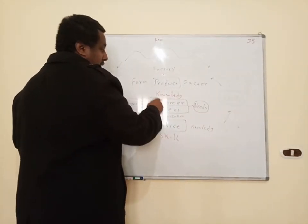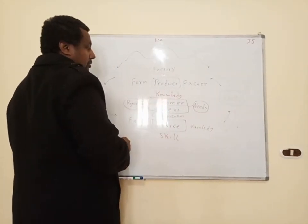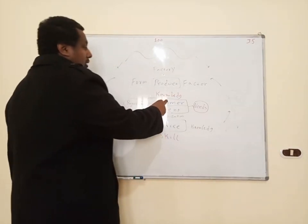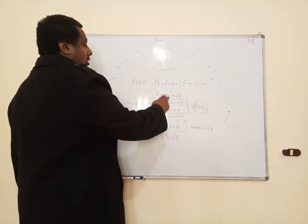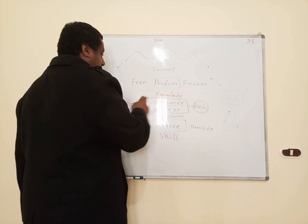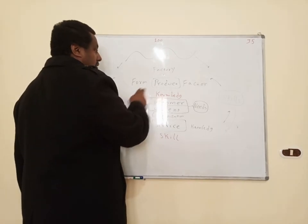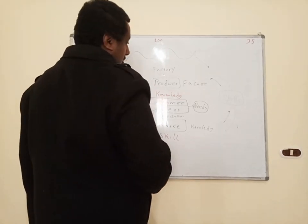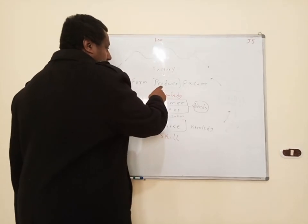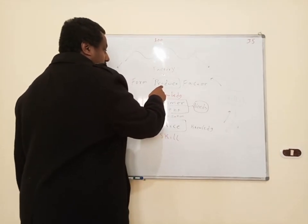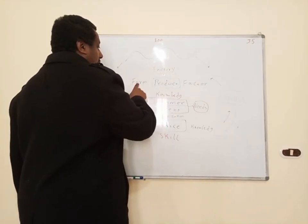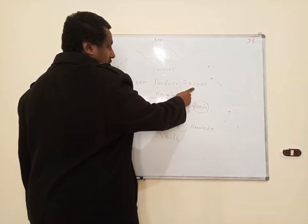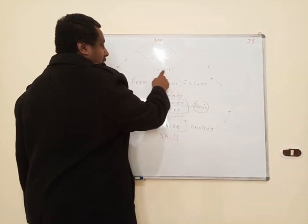Let's start with the customer. The customer requires products. What is a product? A product is a form factor that is made in a factory.